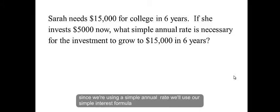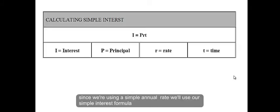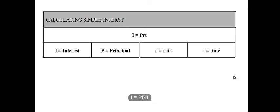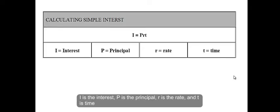Since we're using simple annual rate, we use our simple interest formula: I equals PRT. I is our interest, P is the principal, R is the rate, and T is time. Time is given in years.